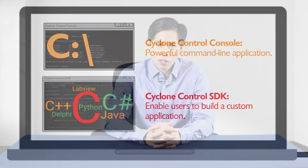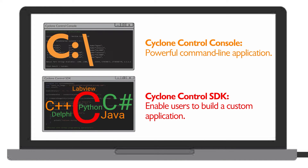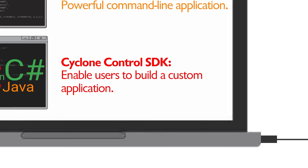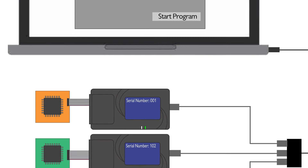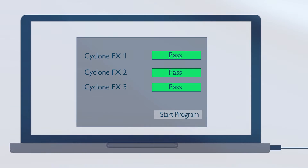For users who are interested in further automation of their production line, the Cyclone Control Suite is a software package included with the Cyclone that allows the user to write their own PC applications to control the Cyclone. For example, an application can be designed to start programming operations on three Cyclones simultaneously, program different dynamic data, and finally report the results back on screen.